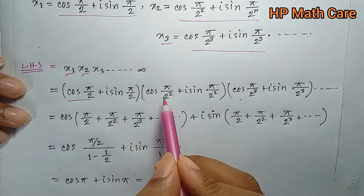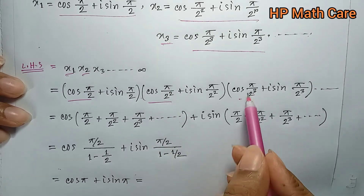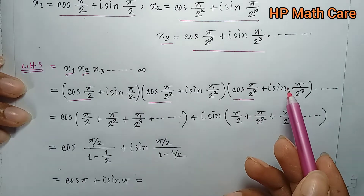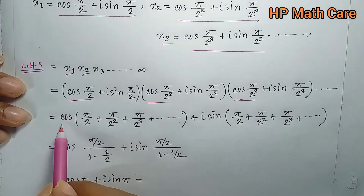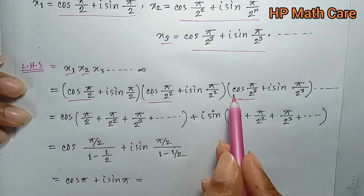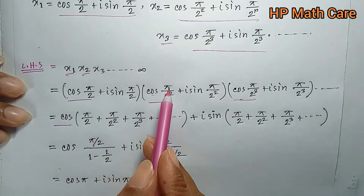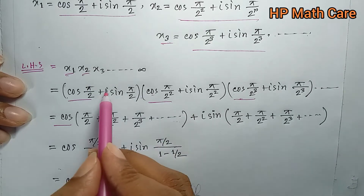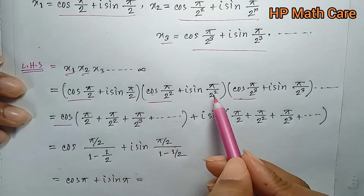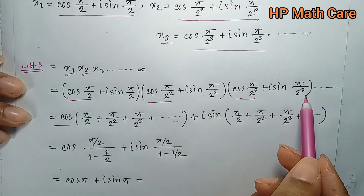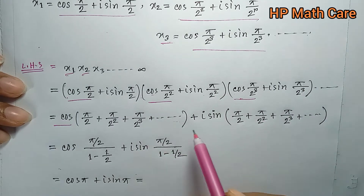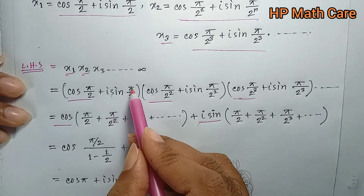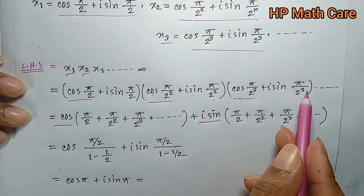So we list: cos(π/2), cos(π/2 squared), cos(π/2 cubed), cos(π/2 to the power 4), cos(π/2 to the power 5) — we will see cos, cos, and cos. Similarly: i sin(π/2), i sin(π/2 cubed), i sin(π/2 to the power 4). So we collect i sin terms: i sin of π/2 plus π/2 squared plus π/2 cubed.